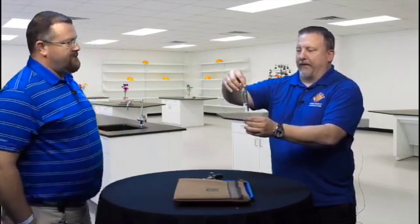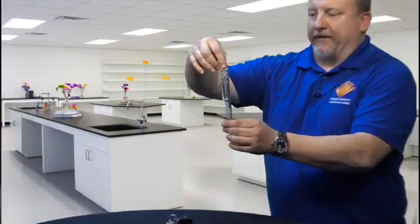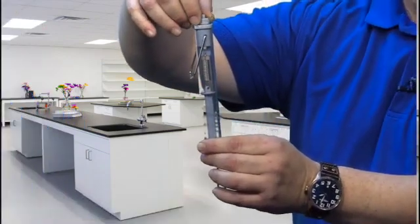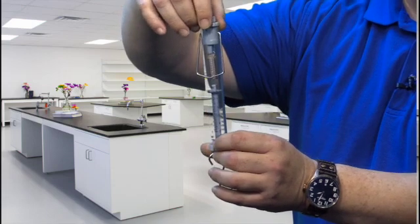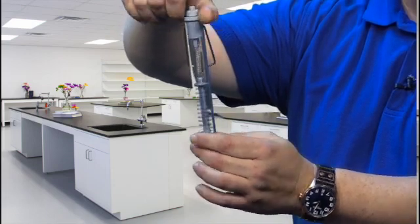First of all, you need to calibrate it, which is at the top. It has a nozzle. You're going to turn until it equals zero. And it's measured two different ways. We have newtons, and on the other side you have grams.